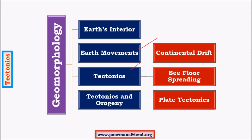Tectonics is simply large-scale movement of earth's crust, or what we consider as the lithosphere. Based on these large-scale movements we have different theories which have changed over time. For example, continental drift theory is the oldest, explained by Alfred Wegener in the 1920s. Then there is seafloor spreading, which came into existence after World War 2, and then plate tectonics, explained in the 1960s.